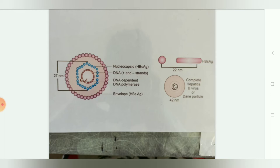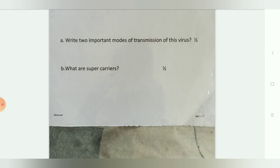The important modes of transmission of Hepatitis B virus are: blood transfusion, needlestick or needle prick injury, vertical transmission, and sexually transmitted route.